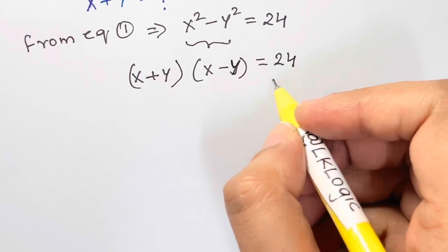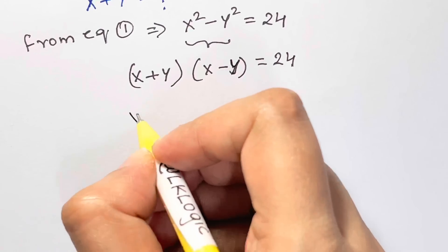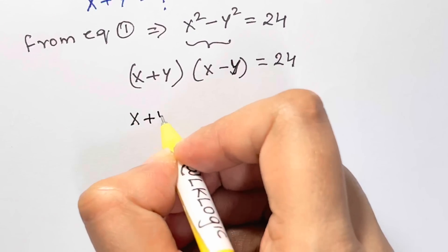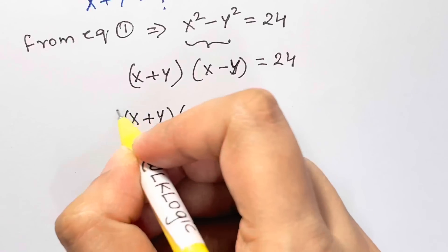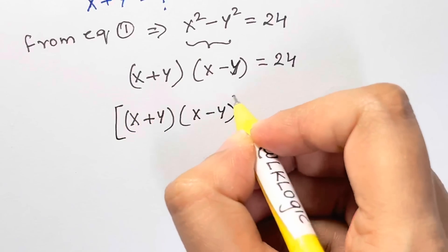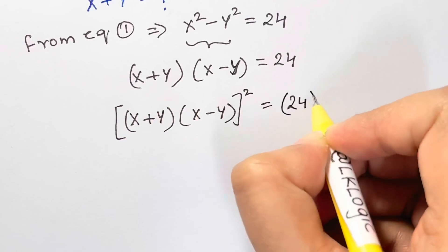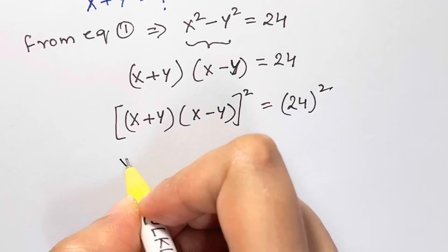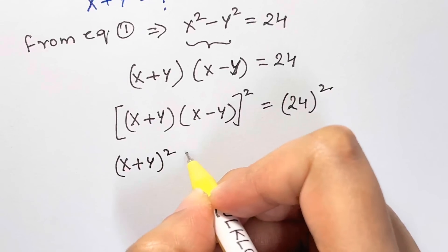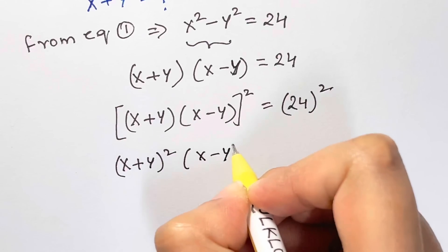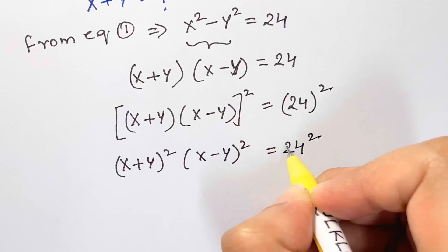Now I'm going to square both sides. So I have (x+y)(x-y) whole squared equals 24 squared, which I can write as (x+y)² times (x-y)² = 24².